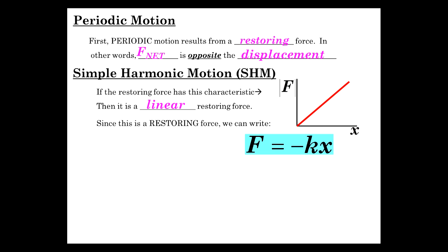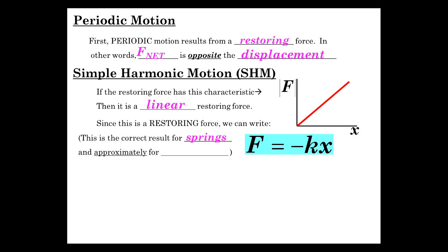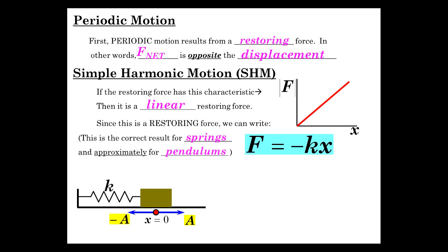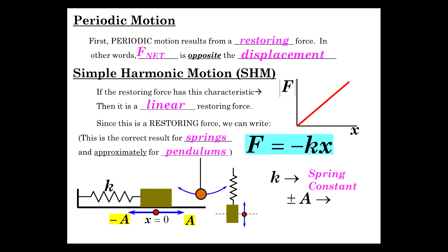As we go toward the right — if we pull a spring to the right, it pulls back to the left. This is the correct solution for springs and a very good approximation for pendulums if you don't displace them through too large an angle. We have horizontal spring systems with mass, spring constant k, amplitude plus or minus A, and x equals zero. A pendulum and a vertical spring are all essentially the same thing.